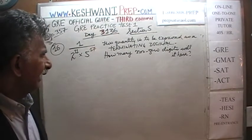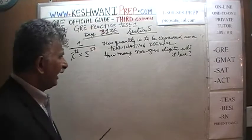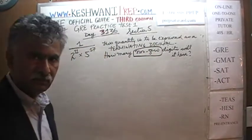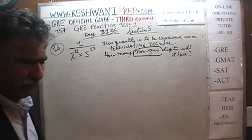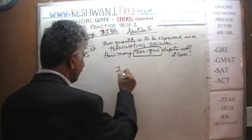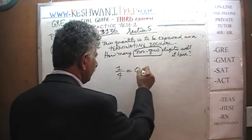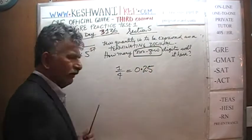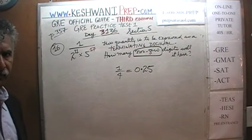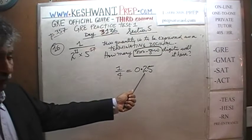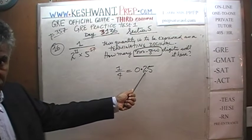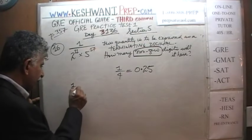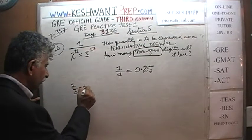Before we work on this, do you understand the language? Do you understand what they mean by terminating decimal and non-zero digits? Let's take a simple example. For example, 1 over 4, we know, is 0.25 — which is 25%. First of all, it is a terminating decimal because it ends. It's not like one-third.